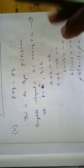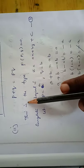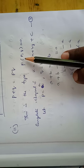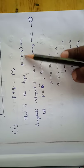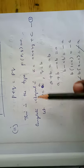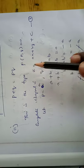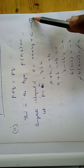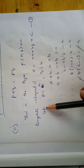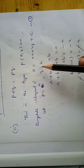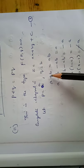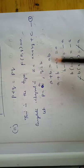The second problem: p plus q equal to pq. This is also type 1, f(p, q) equal to 0. The complete integral form is z equal to ax plus by plus c, equation number 1. Let p equal to a and q equal to b, so applying in this problem: a plus b equal to ab.